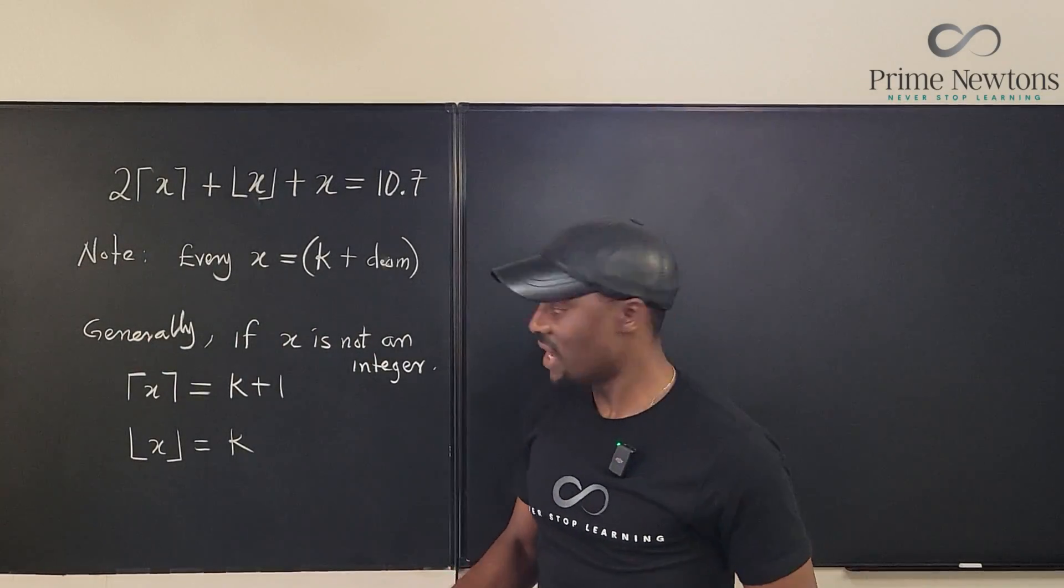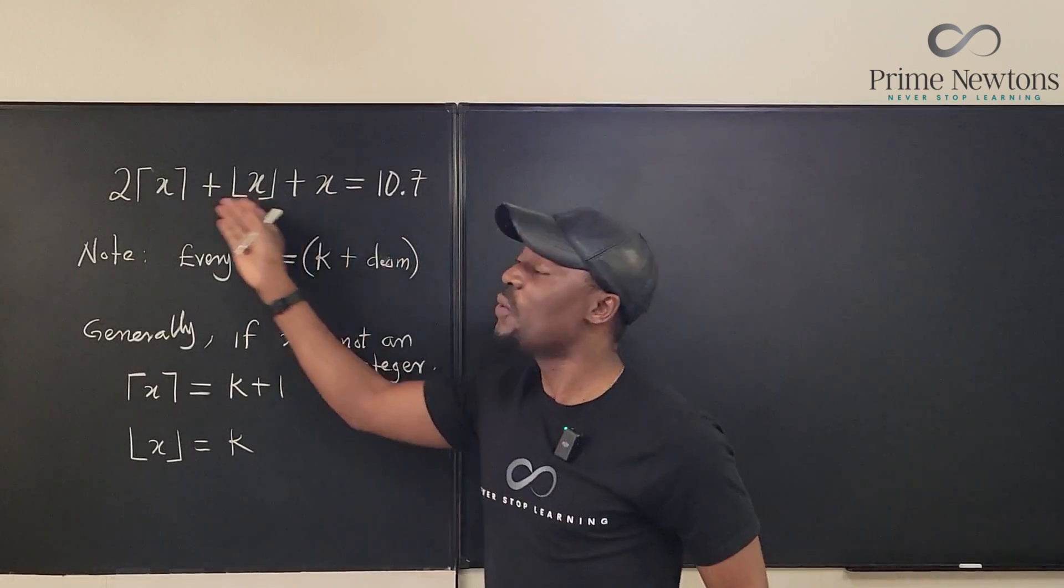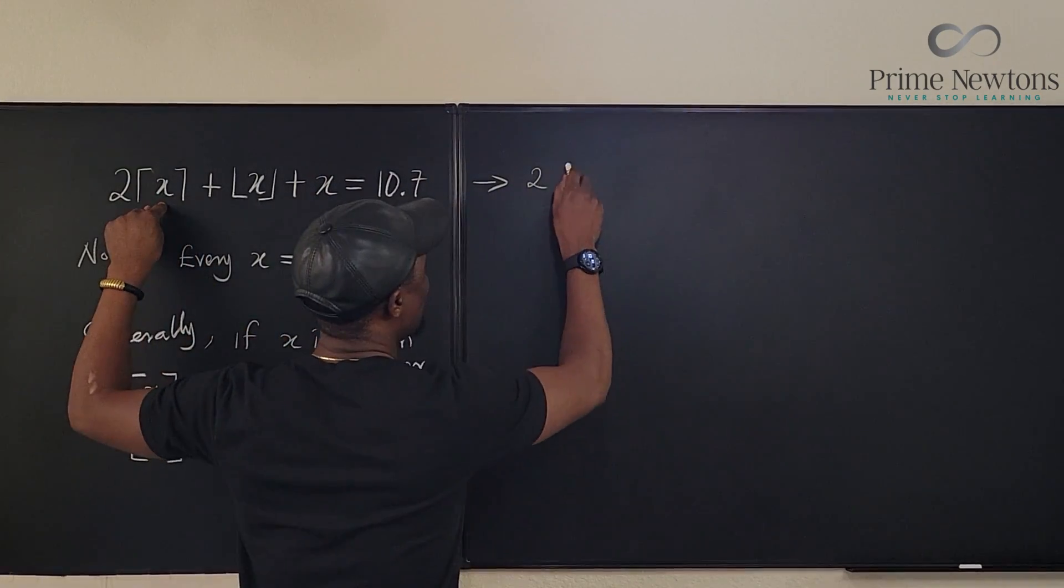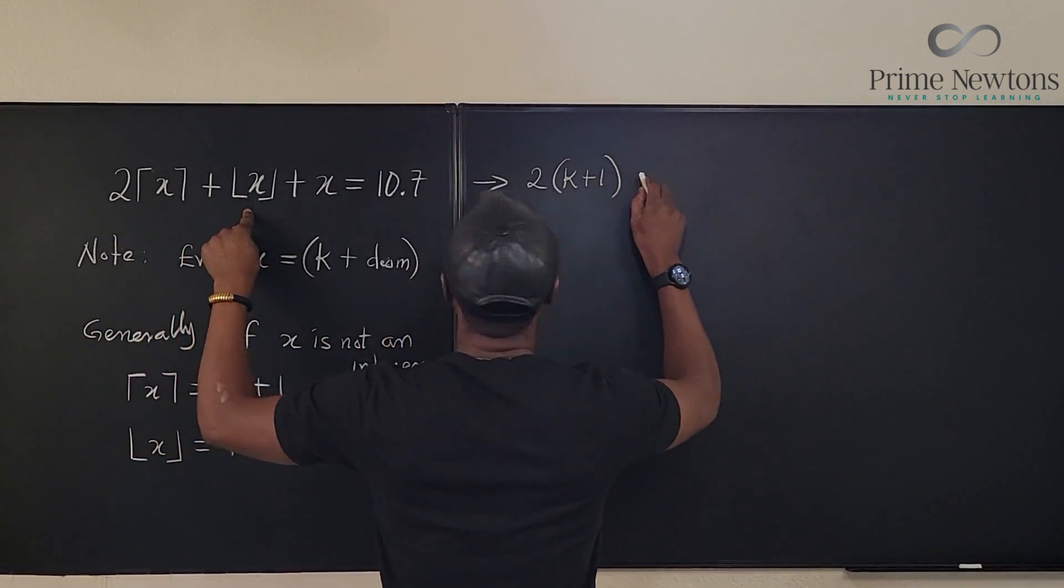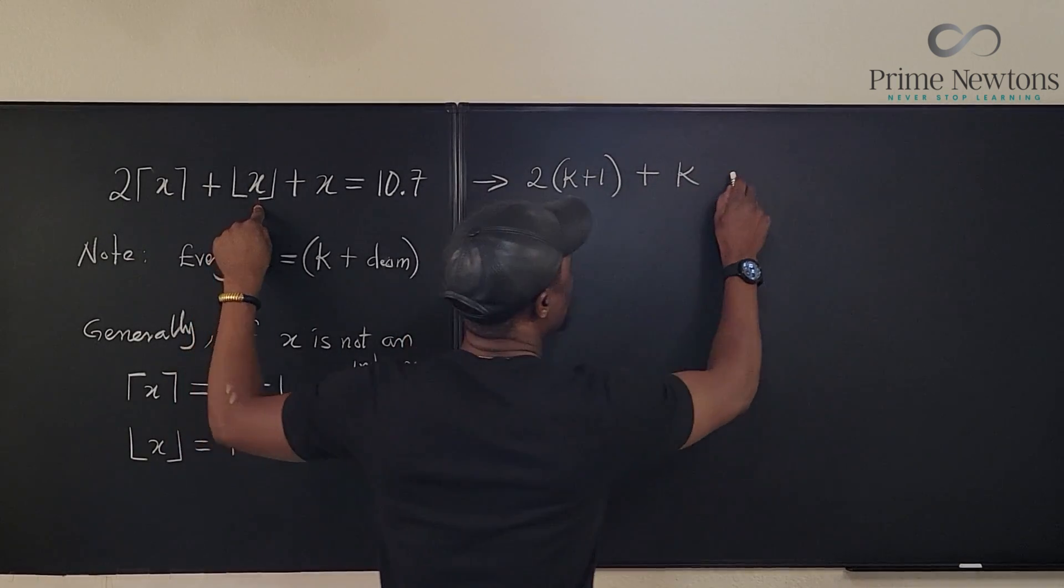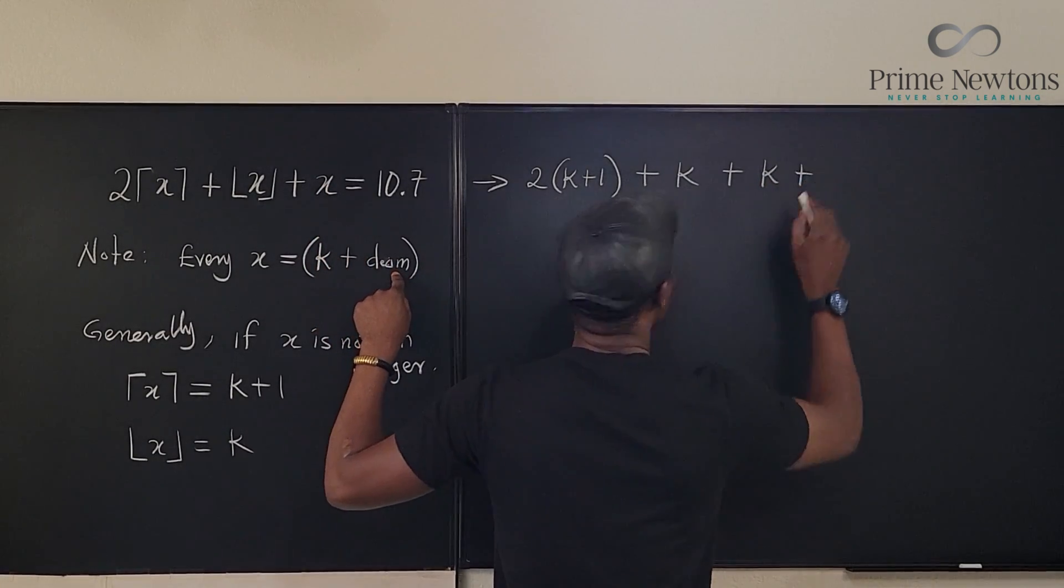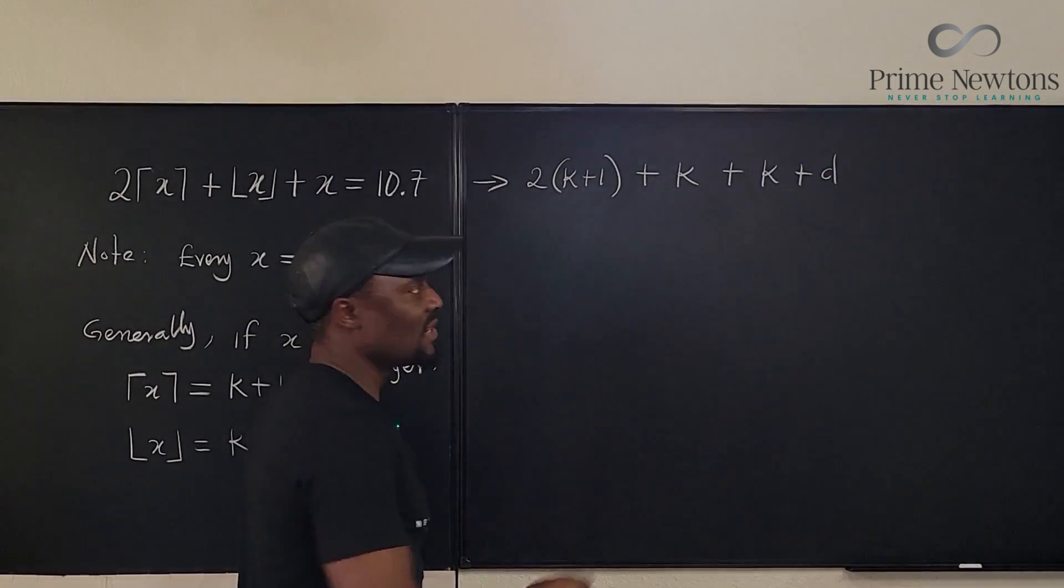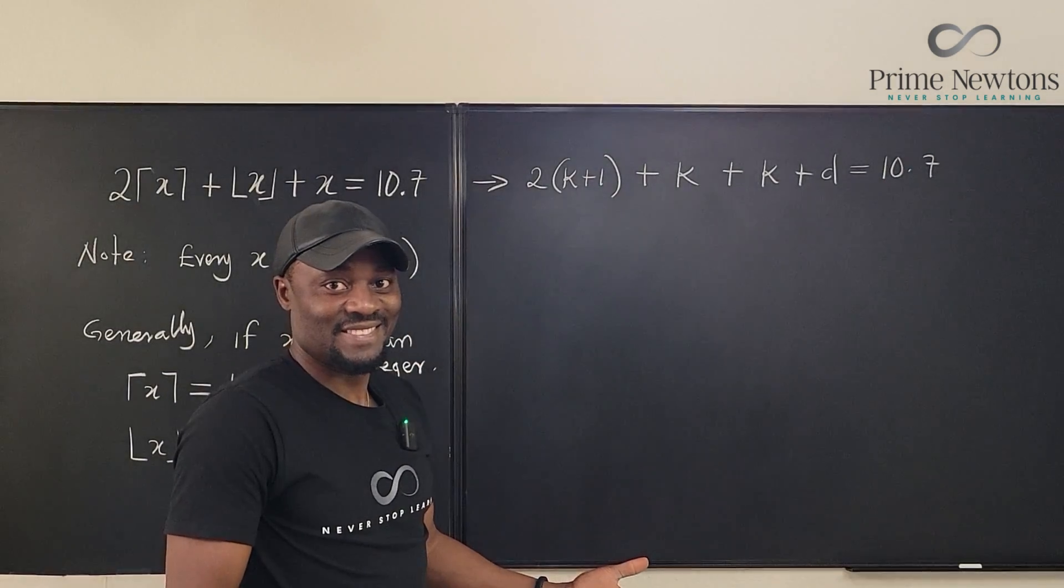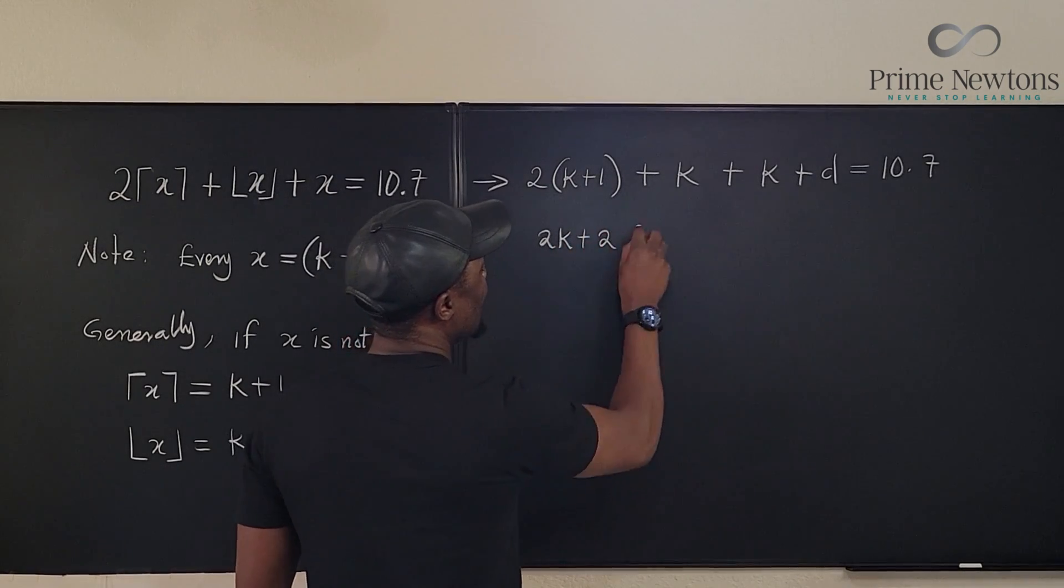If X is not an integer, the ceiling of X is K plus 1 and the floor of X is K. With this explanation, let's solve it. We can say this can be written as 2 times the ceiling of X, which is K plus 1, plus the floor of X, which is K, plus X, which is K plus D, where D is the decimal part. And our answer is going to be 10.7.